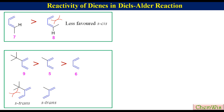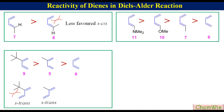Compound 9 is more reactive than compound 5 because in compound 9, due to the bulky t-butyl group, S-trans is not favored and S-cis is more favored. Compounds 7, 10, and 11 are more reactive than compound 6 due to the presence of electron donor groups.